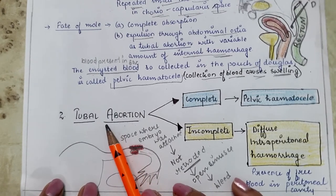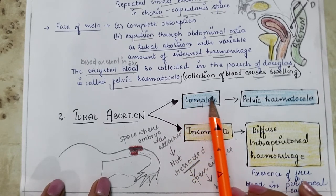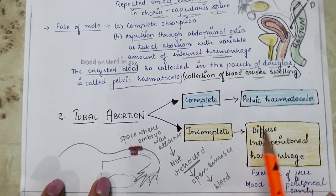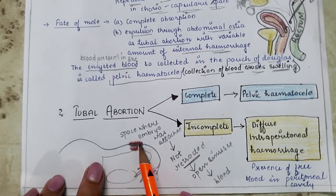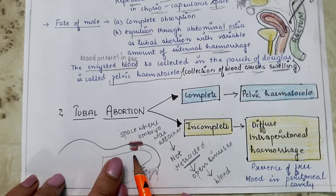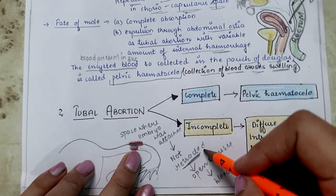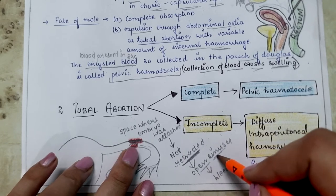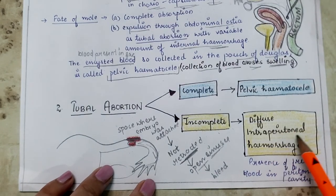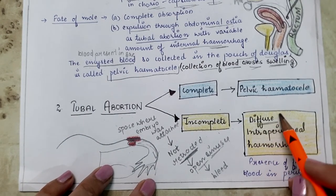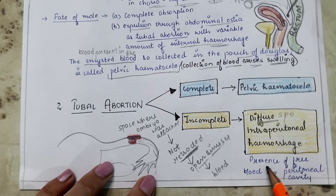Incomplete tubal abortion occurs when the space inside the fallopian tube where the embryo was attached is not retracted — the tissues are not permanently shortened. As a result, tiny blood vessels and sinuses remain open, causing continued bleeding known as diffuse intraperitoneal hemorrhage, which spreads throughout the peritoneal cavity.